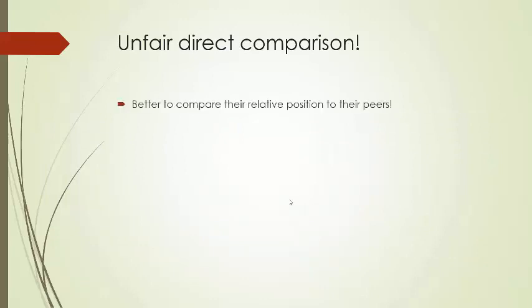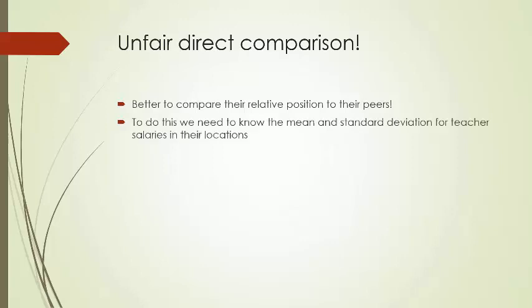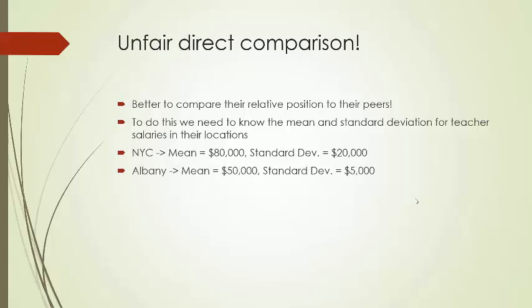So it's better to compare what we call their relative position to their peers. To do this, we need to know the mean and standard deviation for teachers' salaries in their locations. And if you look, what we'll say here is the mean teacher salary in New York City is $80,000 with a standard deviation of $20,000. In Albany, it's a mean of $50,000 with a standard deviation of $5,000. So now who is better off? Well, you might obviously say Nicole, right? Because Nicole makes more than the mean, whereas Jeff makes less than the mean in New York City. But let's put a calculation to this.